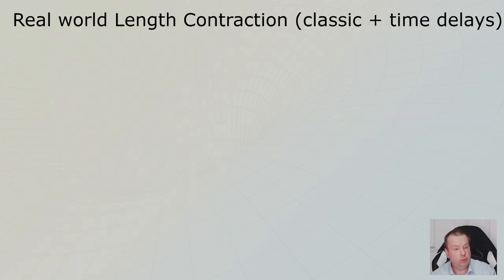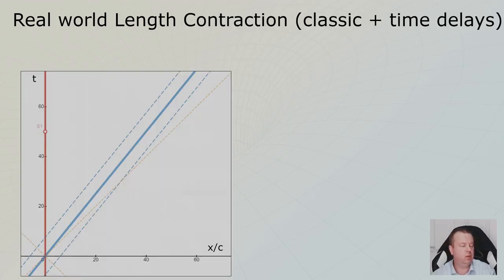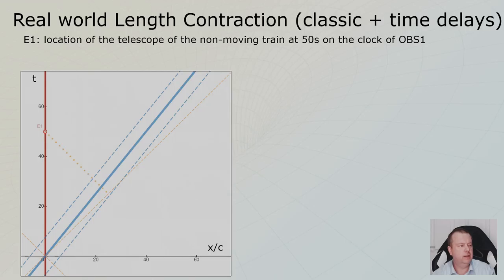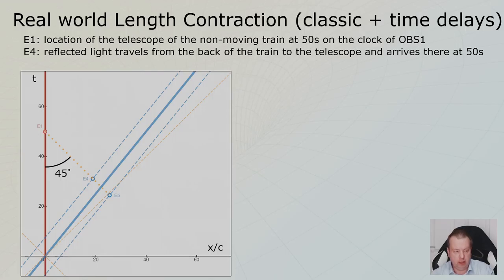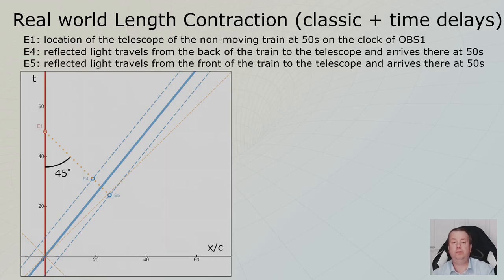Now we are going to make it real world. So here again, we have our red stationary train with event number one and our moving blue train. And I'm going to introduce two more events. I'm going to put in a line, projection line, guideline, exactly at 45 degrees. And this is the travel line along which light travels from the train back to the telescope in the non-moving train. Event number four is light emitted by the back of the train traveling back to the telescope at event number one. Event number five is light traveling from the front of the moving train back to the telescope of the non-moving train.